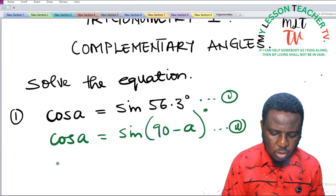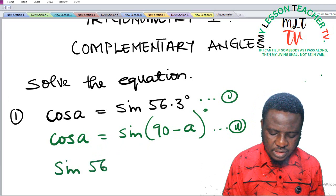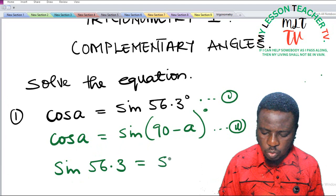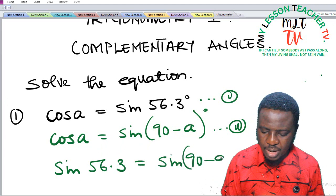If that being the case, we can then say that sine 56.3 is equal to sine of 90 minus A.